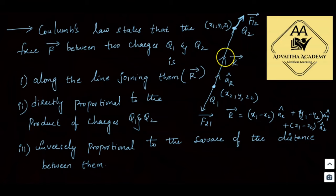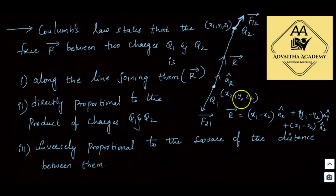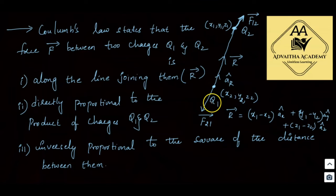The force is along the line r-bar joining the two charges. The unit vector r-cap is the unit vector in that direction. The magnitude r is the modulus of r-bar: r = √[(x1−x2)² + (y1−y2)² + (z1−z2)²], which is the distance between the two points where the charges exist.